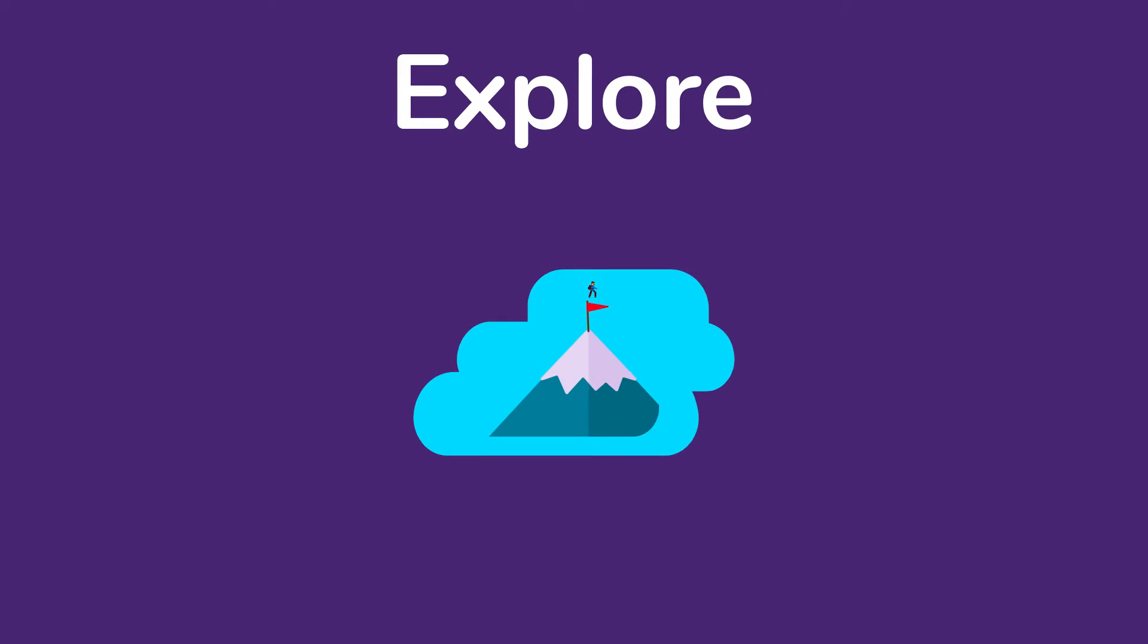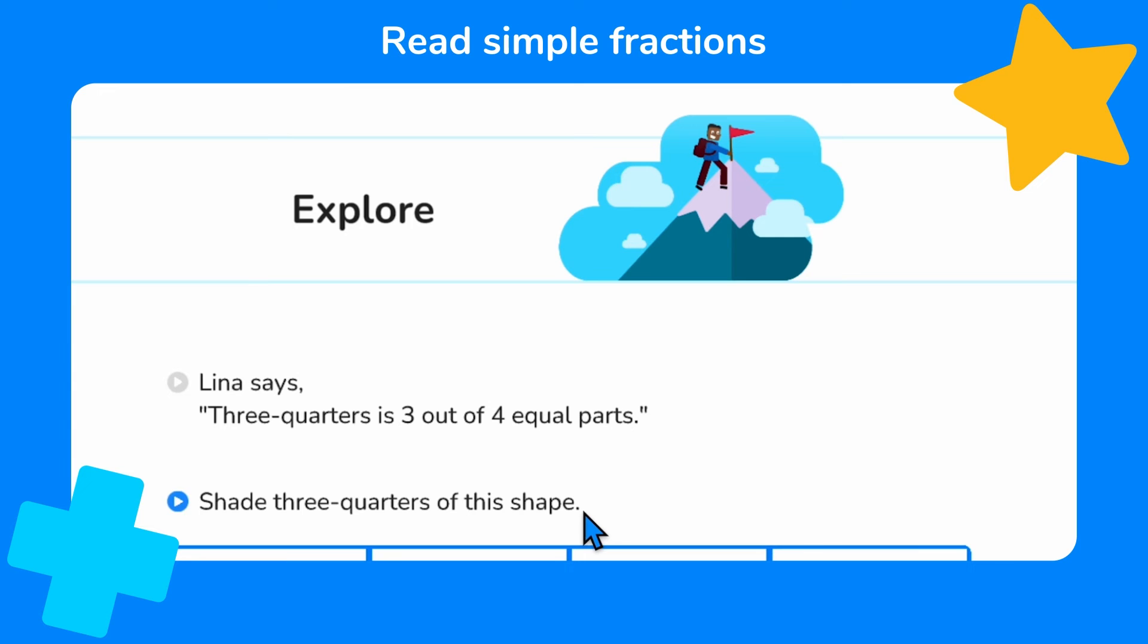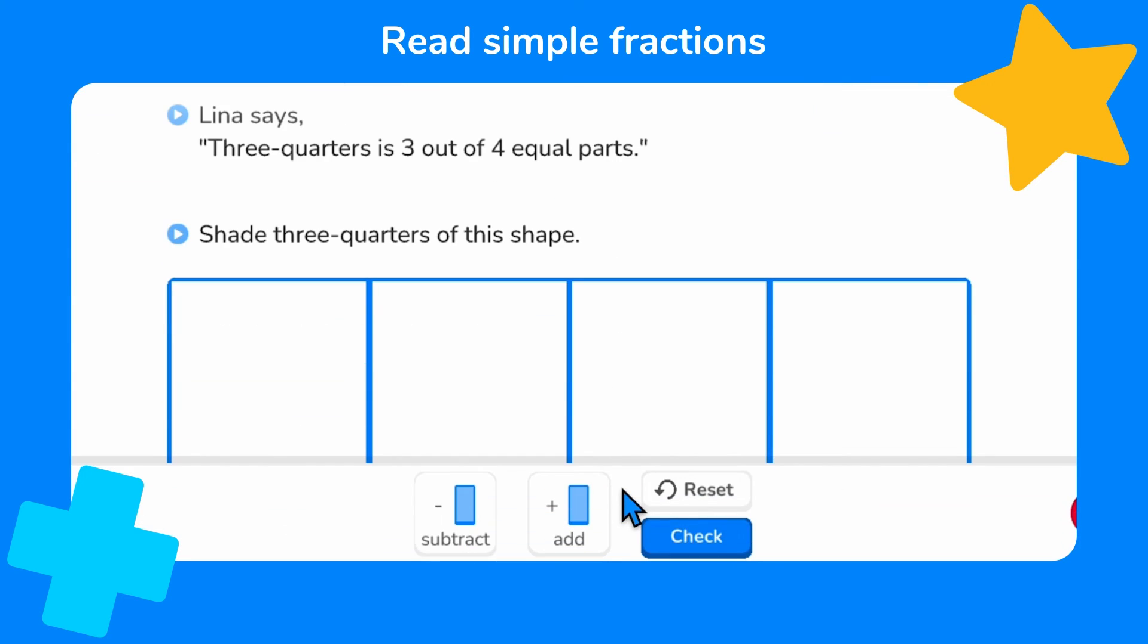Now, let's explore a final example by shading a fraction and deciding how to write it. Lena says three quarters is three out of four equal parts. We need to shade this shape to show three quarters.